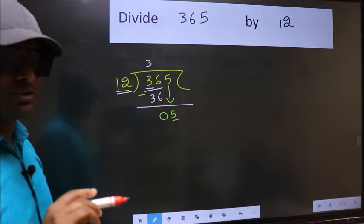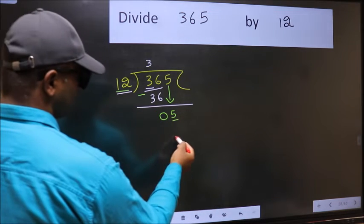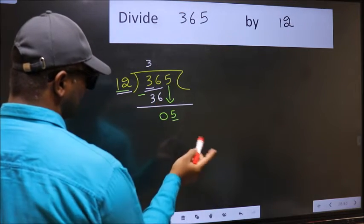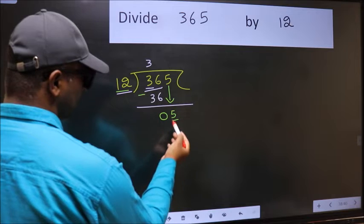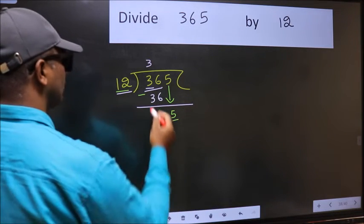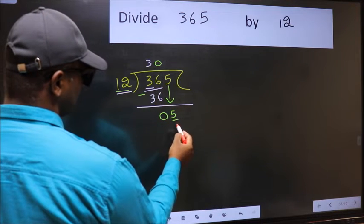Instead, what you should think of doing is, which number should we take here. If I take 1, we will get 12. But 12 is larger than 5. So what we should do is we should take 0. So 12 into 0, 0.